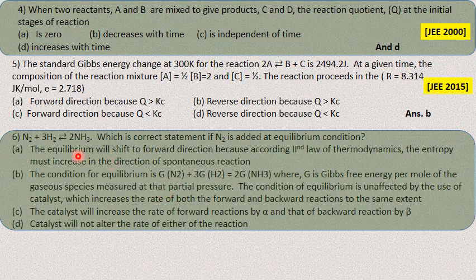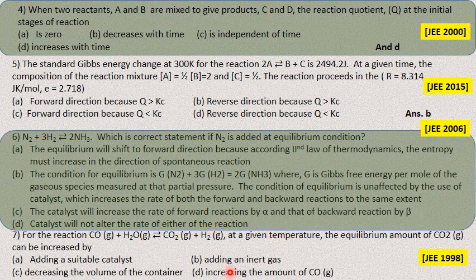The next questions — N₂ + 3H₂ → 2NH₃ (effect of adding N₂ to equilibrium) and CO + H₂O → CO₂ + H₂ (how to increase CO₂ at a given temperature) — are based on concepts already discussed. You can answer these independently.